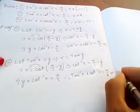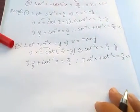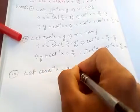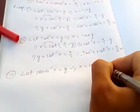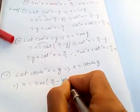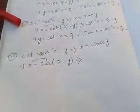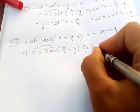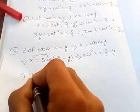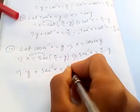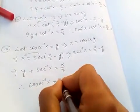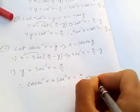For the third identity, let cosec inverse of x equal y, so x equals cosec of y. In terms of sec, it will be sec of pi by 2 minus y. Transferring the terms, sec inverse of x equals pi by 2 minus y, and therefore y plus sec inverse of x equals pi by 2. Since y is cosec inverse of x, cosec inverse of x plus sec inverse of x equals pi by 2. So this is proved.